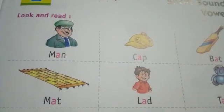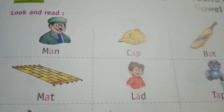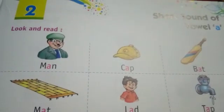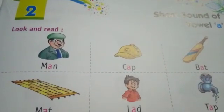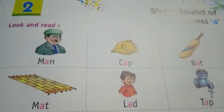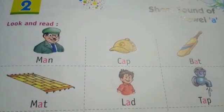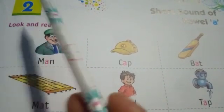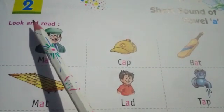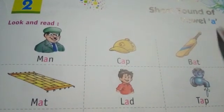Hello students, good morning to all of you. I am Baby Kumari, class teacher of UKG from Mahatma Gandhi Sikshan Sansthan, Dharvanga. Today I am going to revise Chapter 2 — the short sound of vowel A.